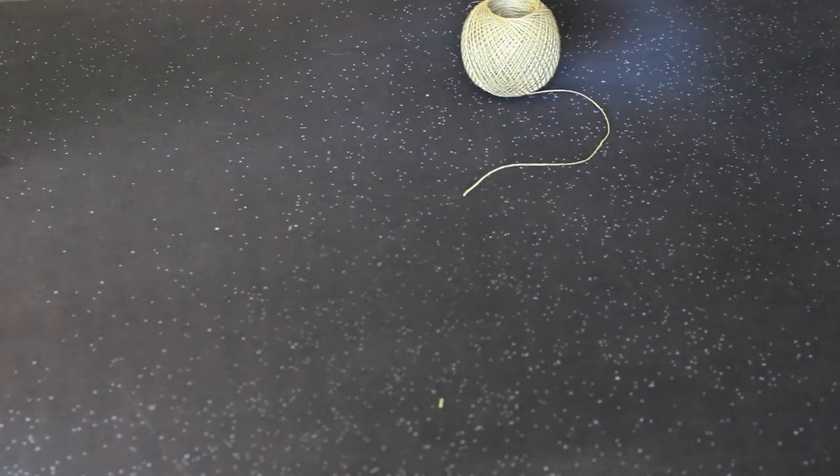If you do have glue, go ahead and apply it to one end of your string. First, make sure the string is cleanly cut. Put a small amount of glue on your index finger and apply it to the very end of the string. Pinch the string between your thumb and index finger and twist to tighten the threads of the string and spread the glue about an inch up from the end of the string. Set this aside to dry.